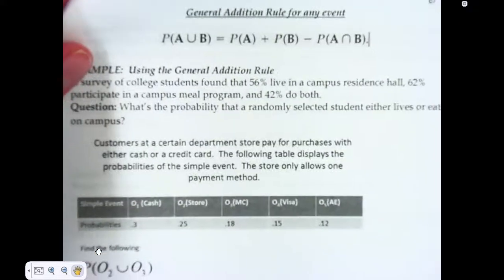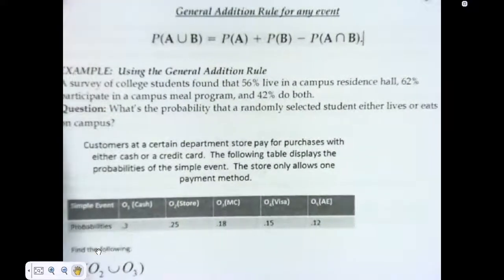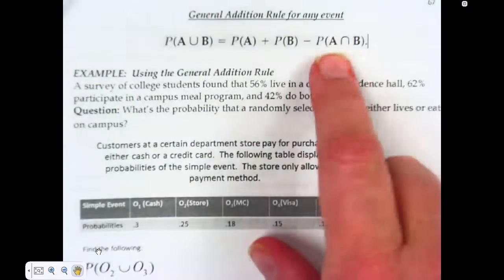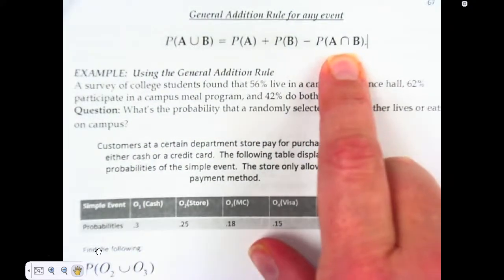We're going to take a look at the general addition rule for any event. You can use this for any event, because if there are disjoint events, this would just be zero, so there's nothing to subtract.